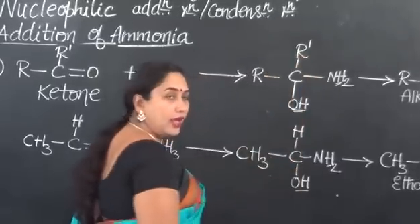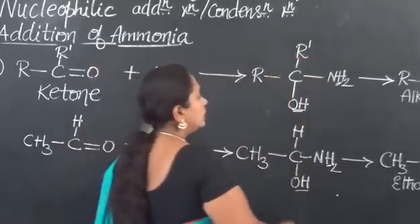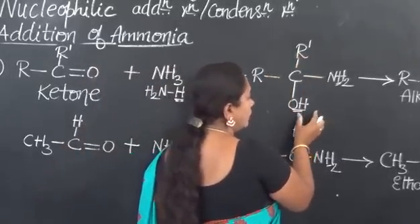Now, we have a product happening in a similar way like that on aldehyde. Instead of H, we have R dash in case of ketone. So, now, they will undergo further process. What is the process?